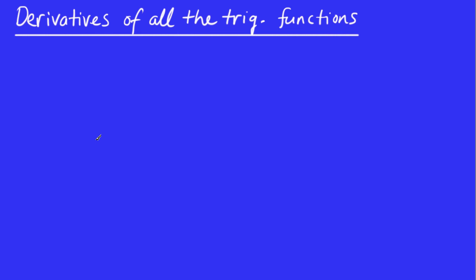In this video I would like to determine the derivatives of all the different trig functions. We already know the derivatives of sine and cosine. The derivative of sine x is cosine x, and the derivative of cosine x is negative sine x.